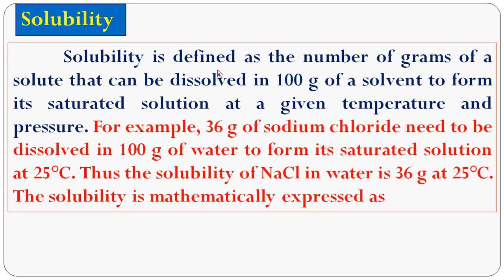In this class, you are going to see the topic solubility. Solubility is defined as the number of grams of solute that can be dissolved in 100 grams of solvent to form its saturated solution at a given temperature and pressure. For example, 36 grams of sodium chloride dissolved in 100 grams of water to form a saturated solution at 25 degrees Celsius. So the solubility of sodium chloride in water is 36 grams at 25 degrees Celsius.